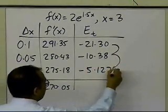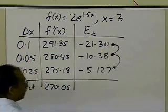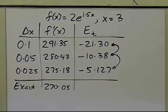So let me write down the exact value right here, which is 270.05, and of course your true error is also decreasing as you go from a larger delta x to a smaller delta x.